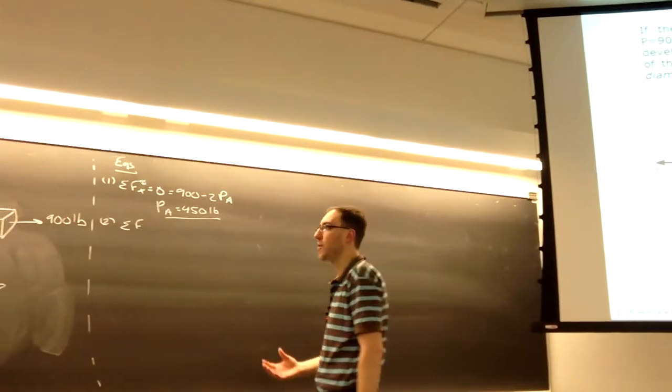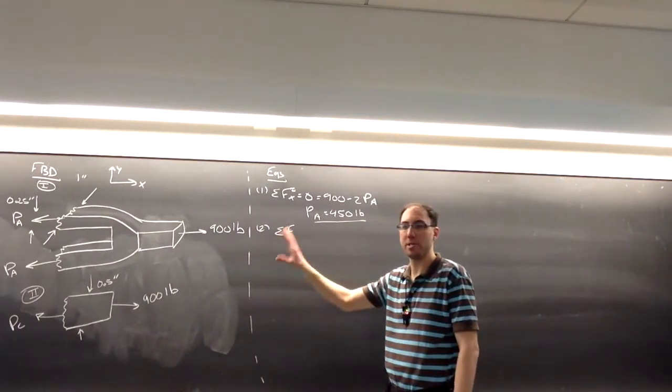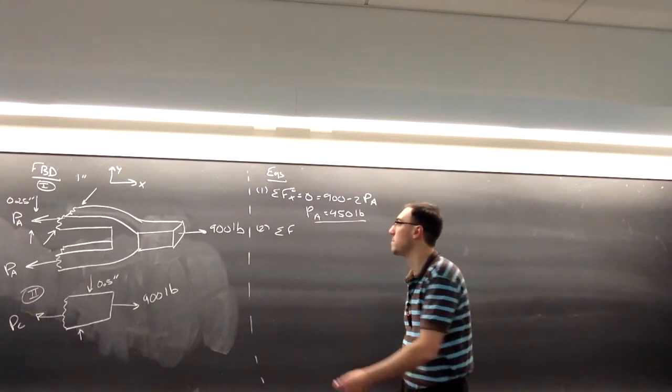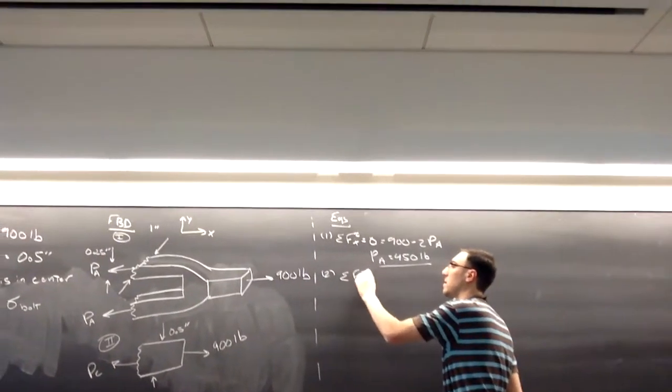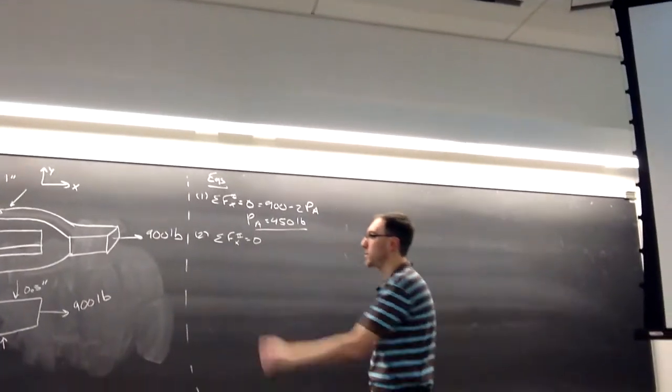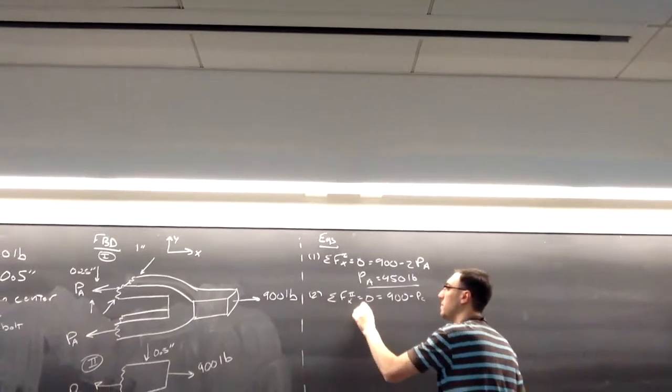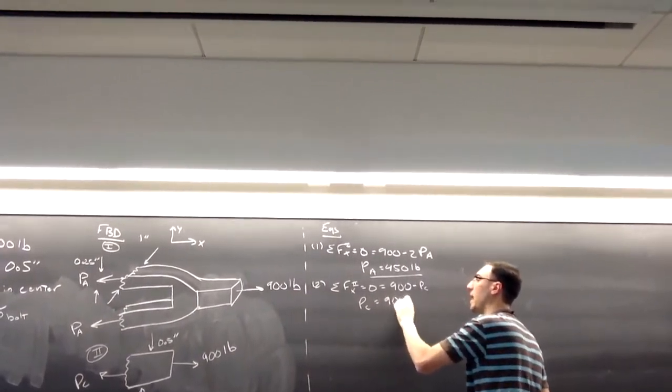Then the next part, we're just focusing on the shear loads. So I am ignoring those in the drawing, but potentially they could be there. In picture two, if I sum forces, I have 900 minus P sub C. P sub C must be 900 pounds.